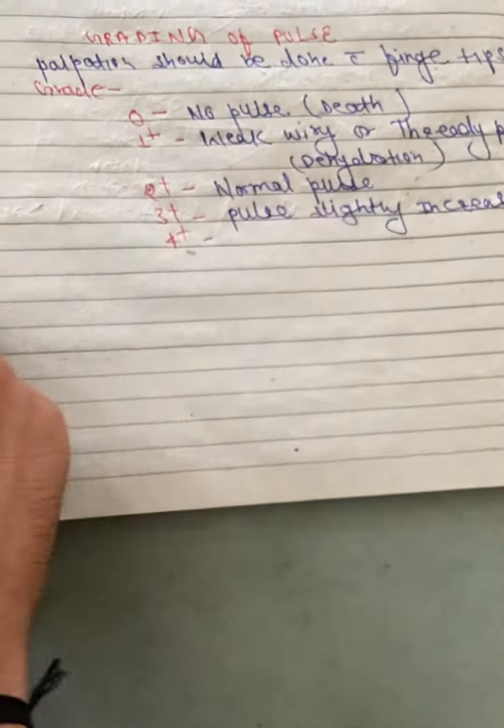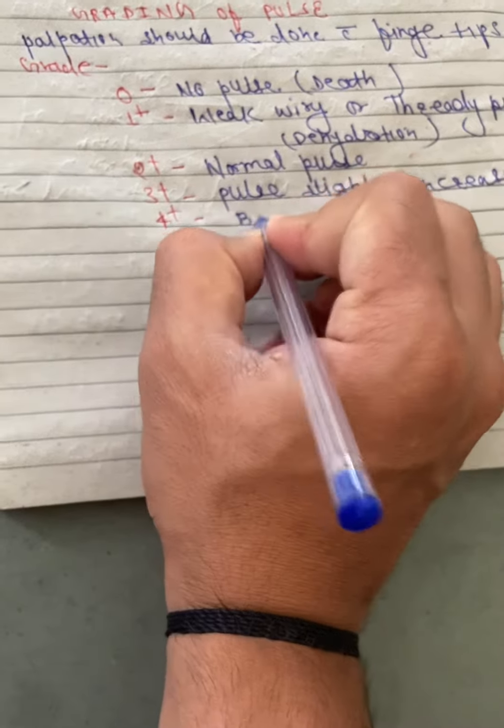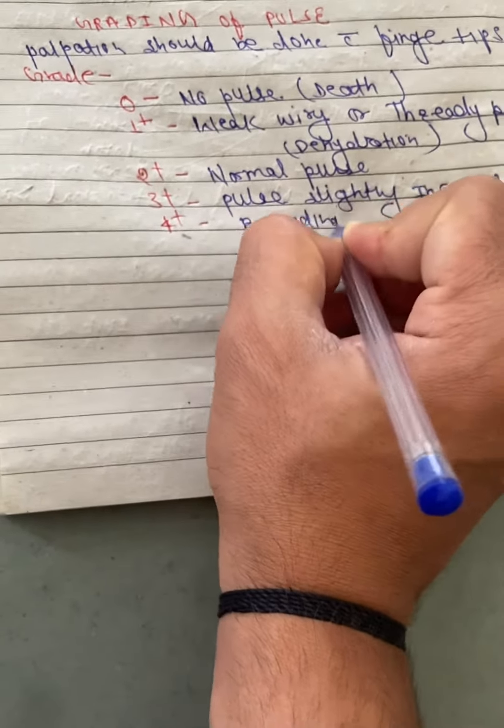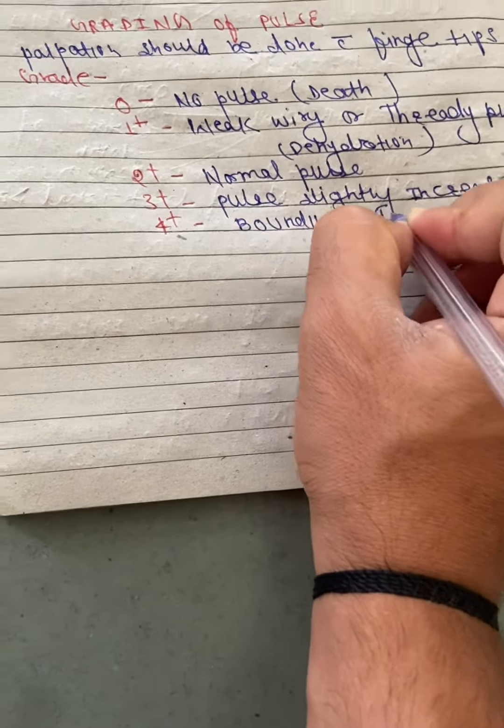Grade 4 Plus: Bounding pulse, seen in heart failure patients when cardiac output is increased.